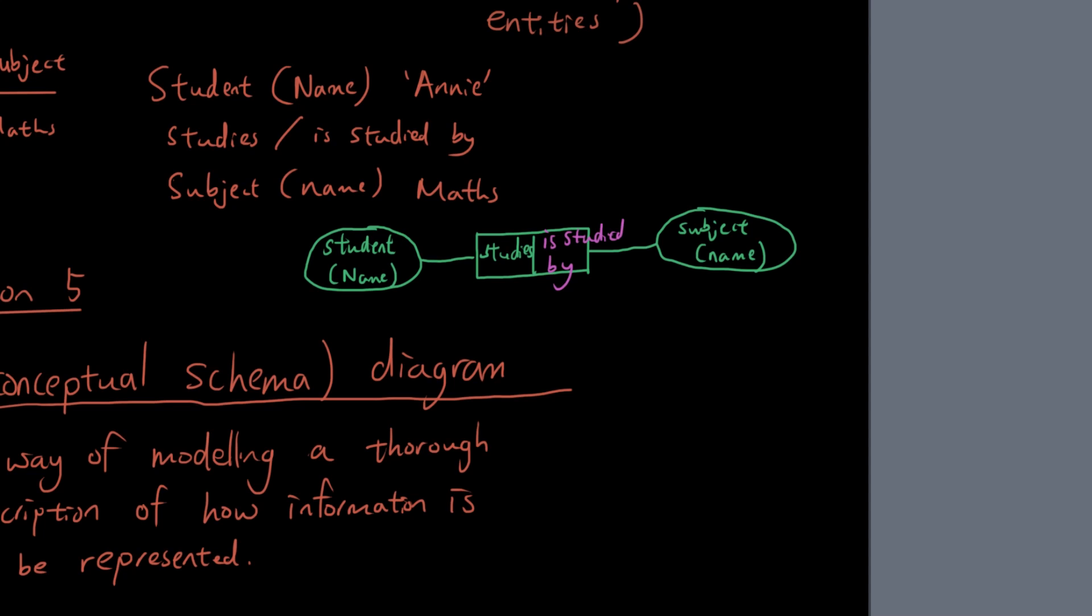How awesome. Now we also call this a binary relationship because there are only two entities involved in this relationship. Right? There are only two entities involved.